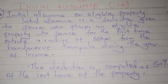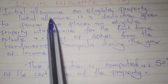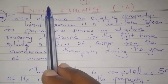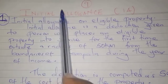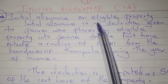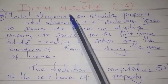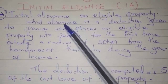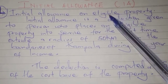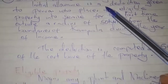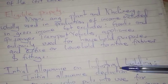The first capital deduction we are looking at is initial allowance. 'Initial' means in the beginning, then allowance. It is divided into two: we have initial allowance on eligible property and then initial allowance on industrial building.